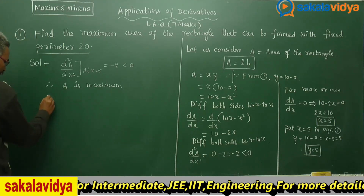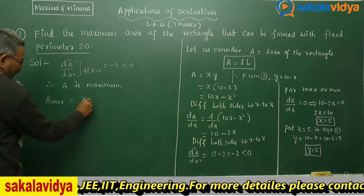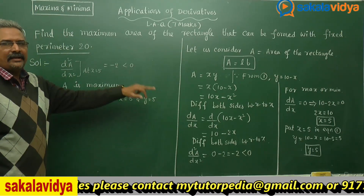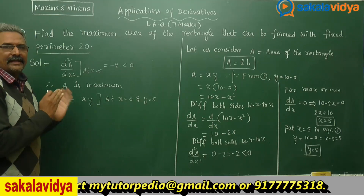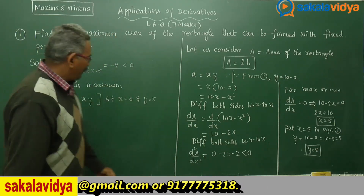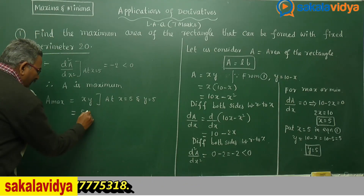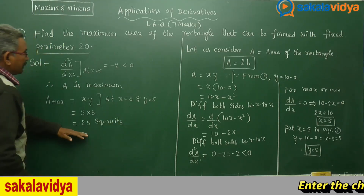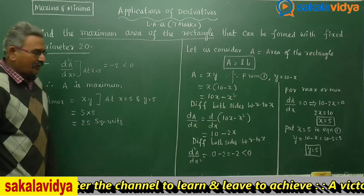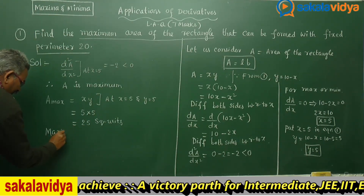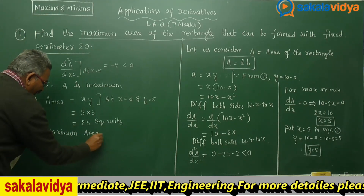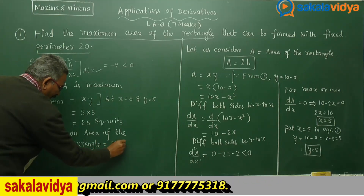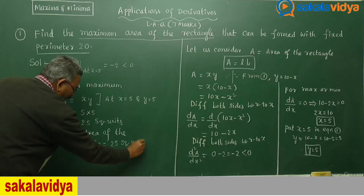The maximum area is A = x · y at x = 5 and y = 5. Substituting, we get 5 × 5 = 25 square units. So the maximum area of the rectangle is 25 square units. This is the answer.